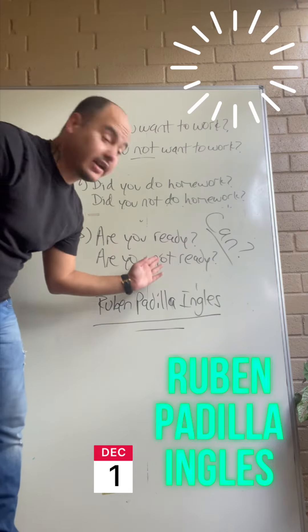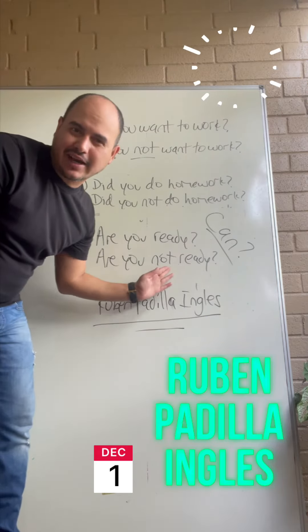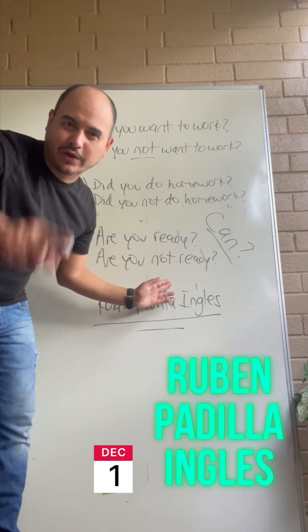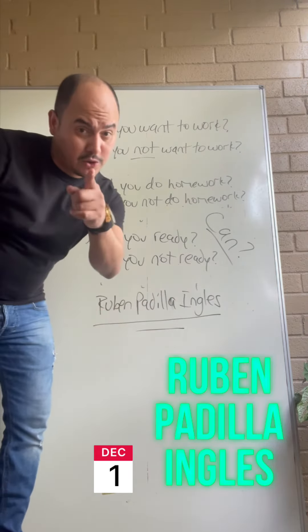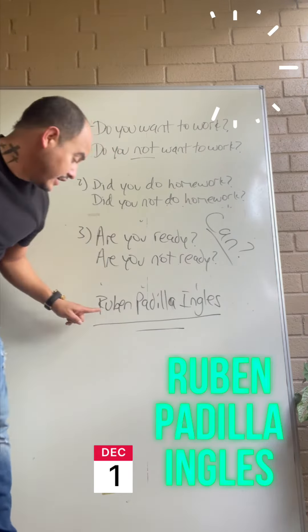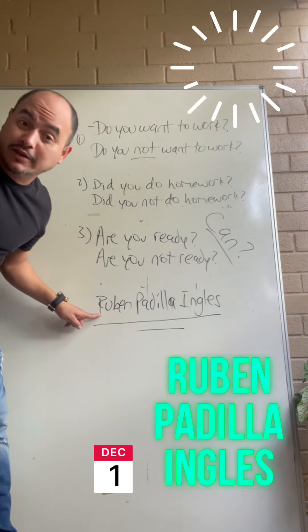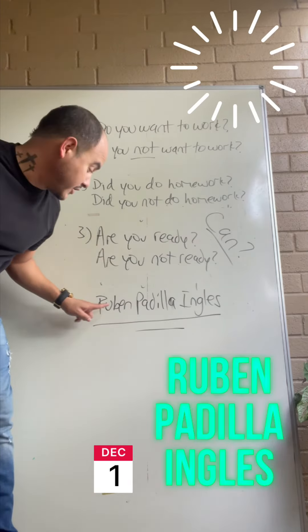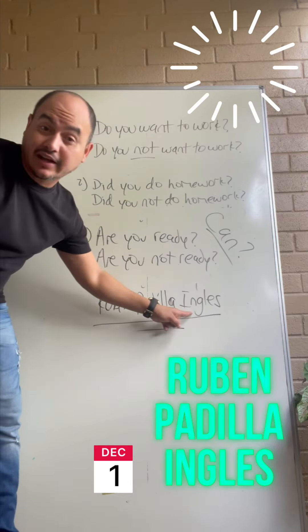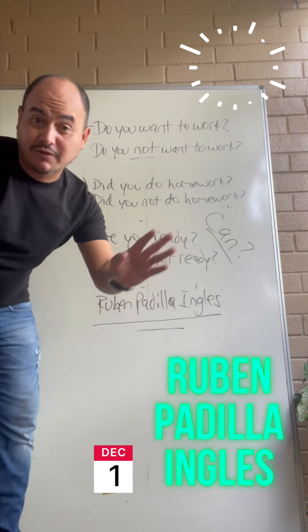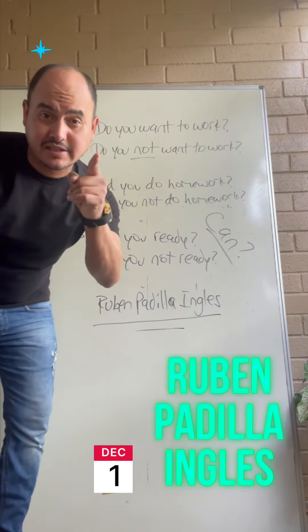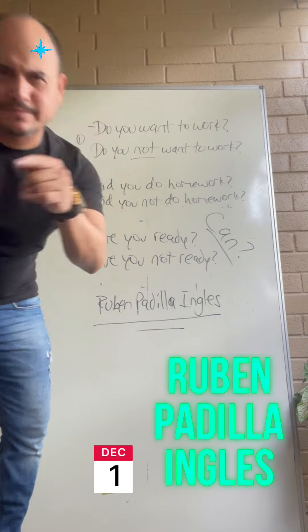Okay, so remember that all you have to do — todo lo que tienes que hacer — es agregar 'not' antes del verbo. Espero que esto te sirva. Sígueme en todas las plataformas, Ruben Padilla Inglés, para que sigas aprendiendo más.